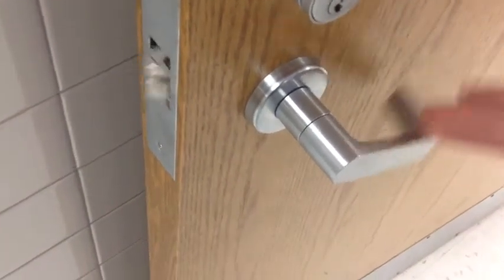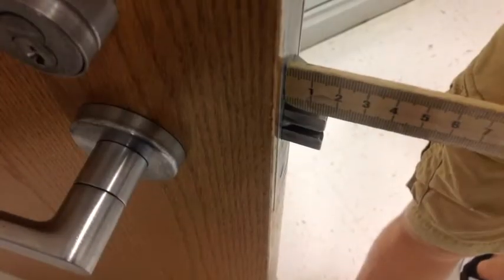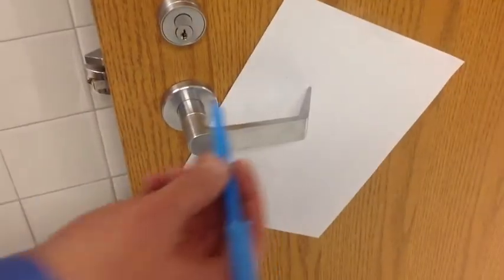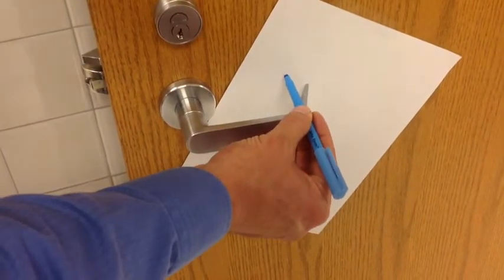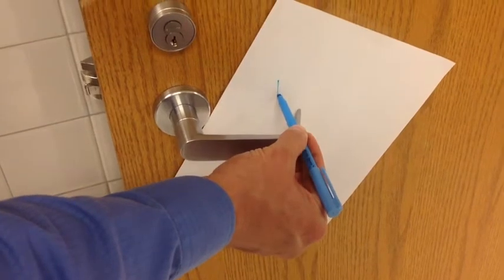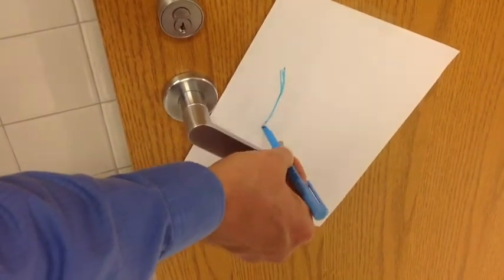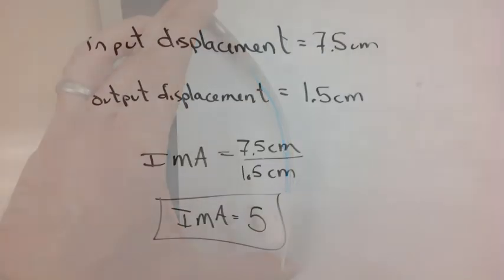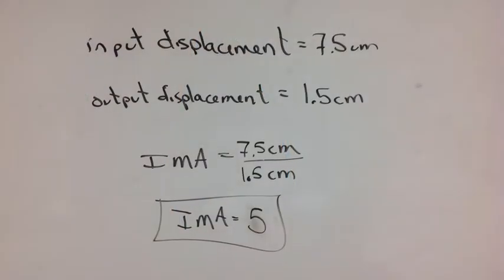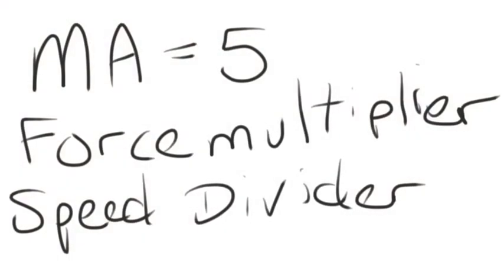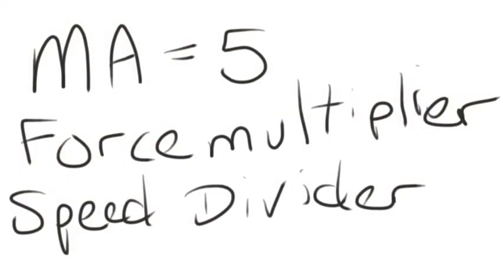So let's measure it. The output displacement is the total distance moved by that latch, and the input displacement is the distance moved by that point of contact with the force. I can approximately mark it out so I can measure it later, and use a bendy ruler to measure the input displacement. The input displacement is 7.5, output is 1.5, so the mechanical advantage is 5 — meaning it multiplies the force by 5 and divides the speed by 5.